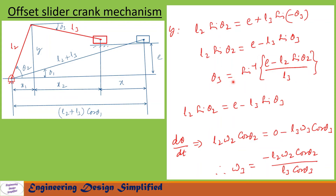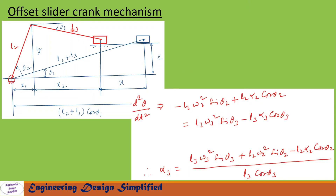Using that equation we can find theta3 for any given value of theta2. To find omega3, we differentiate l2·sin(theta2) = e − l3·sin(theta3) with respect to time. We get l2·omega2·cos(theta2) = 0 − l3·omega3·cos(theta3), since e is constant and its derivative is zero. Therefore: omega3 = −(l2·omega2·cos(theta2)) / (l3·cos(theta3)).